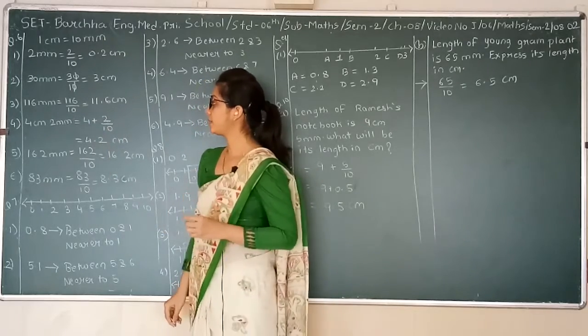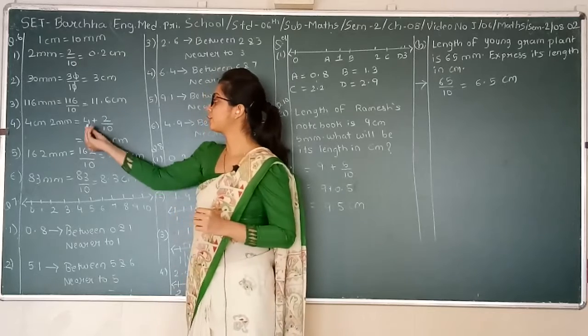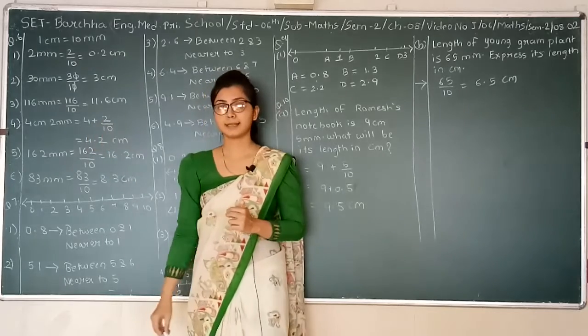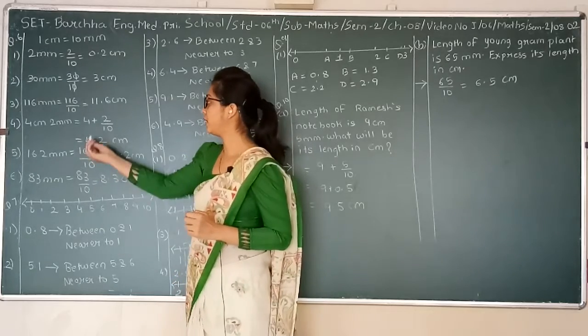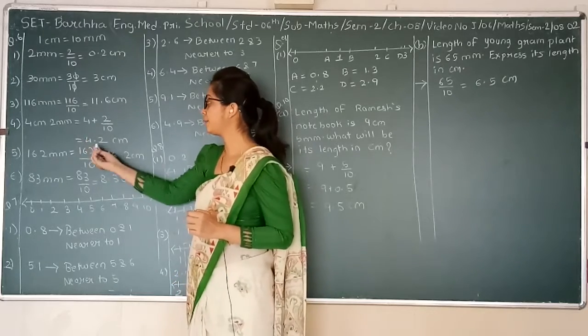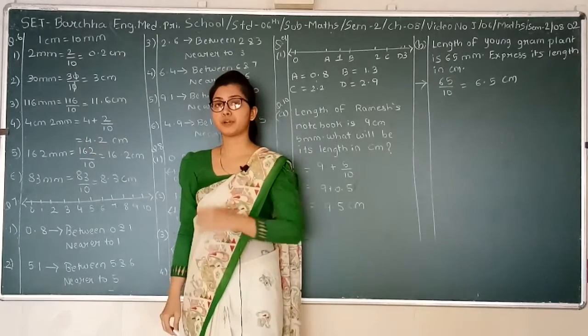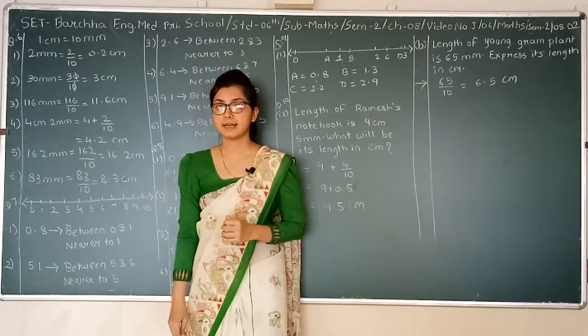Next one: 4 centimeters plus 2 millimeters is equal to 4 plus 2 upon 10. So we will get 4.2 centimeters as the answer.